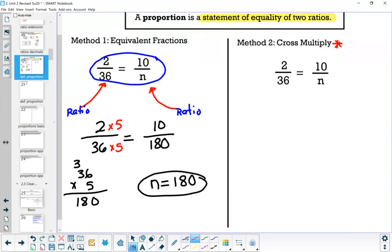Cross multiply. So if you have a ratio equal to a ratio, you can do what we call cross multiply, which I'm multiplying the 2 times the N, 2N, equals, I'm multiplying the 10 times the 36. That's 360. So what I just did there was cross multiply. The butterfly that you see that I drew on the screen produced 2N equals 360.